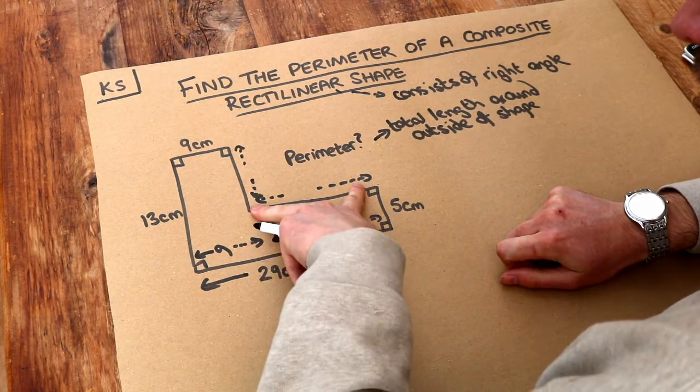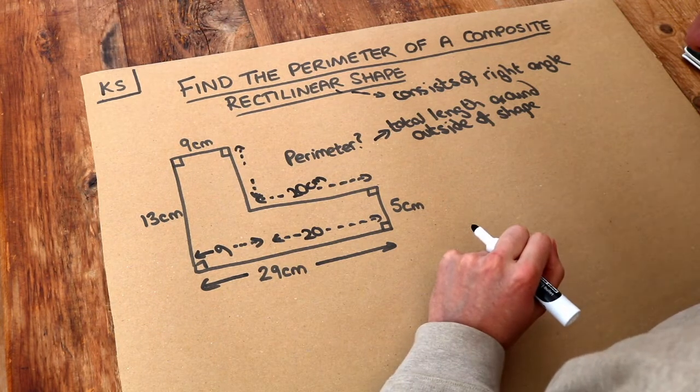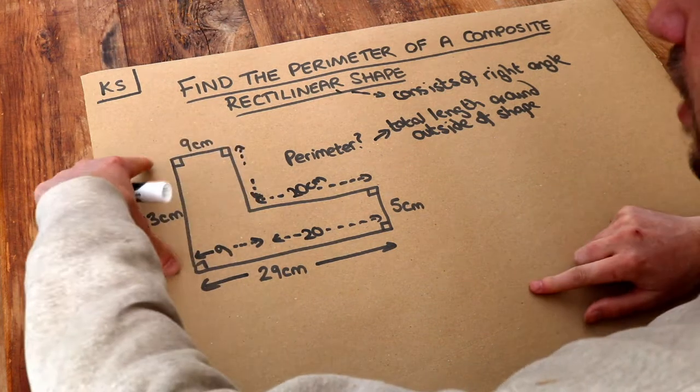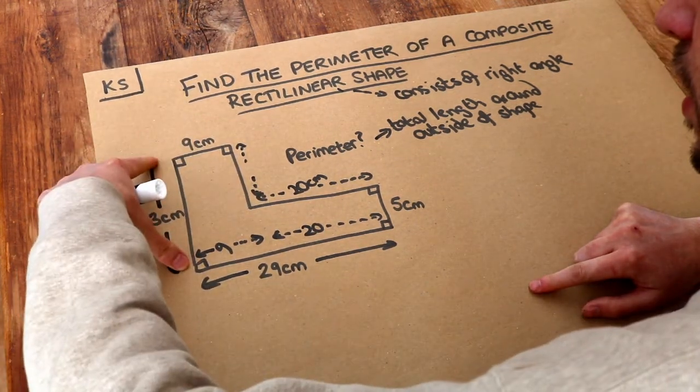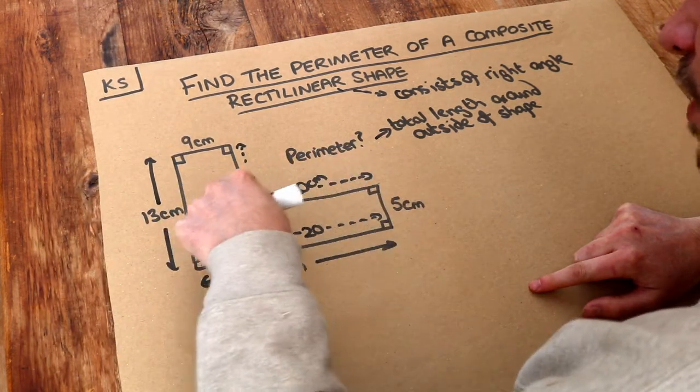And that length is the same as that, that's 20cm. So we just sometimes need to subtract these lengths. We can do a similar thing to work out this. Can you see that the total height of the whole diagram is 13, but the height of the bottom bit, so this bit here, is 5cm.